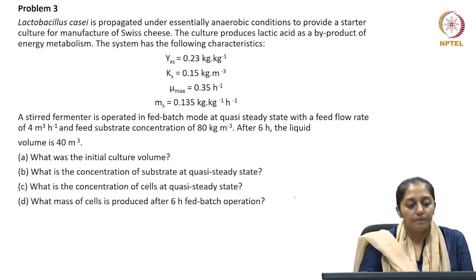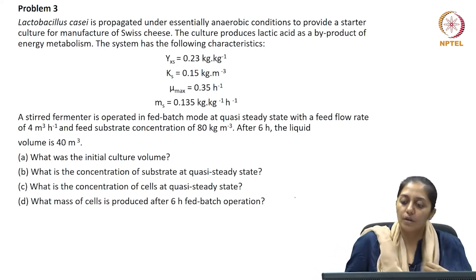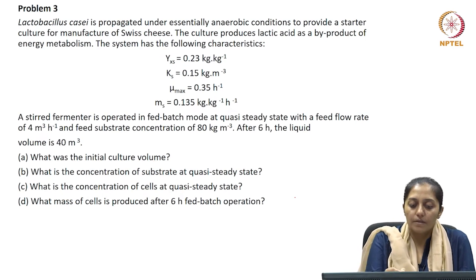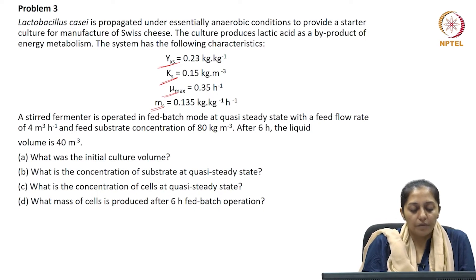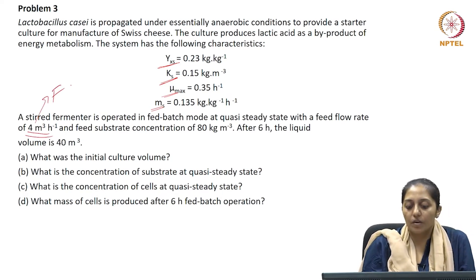Problem 3: Lactobacillus KC is propagated under essentially anaerobic conditions to provide a starter culture for manufacture of Swiss cheese. The culture produces lactic acid as a by-product of energy metabolism. The given system characteristics include the yield coefficient Yx/s, Monod saturation constant Ks, maximum specific growth rate mu_max, and the maintenance coefficient. A stirred fermenter is operated in fed batch mode at quasi steady state with a feed flow rate F of 4 meter cube per hour and feed substrate concentration Si of 80 kg per meter cube.